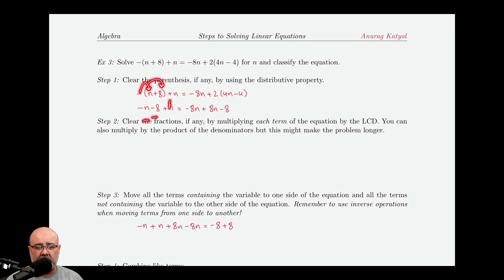The plus n just comes along for the ride, the negative 8n comes along for the ride, and this 2 has to get distributed into both the 4n and the negative 4. So, 2 times 4n gives us 8n, and then 2 times negative 4 gives us negative 8.